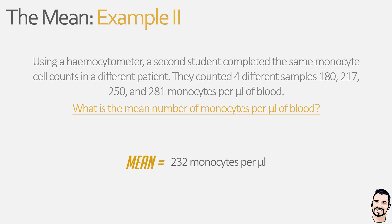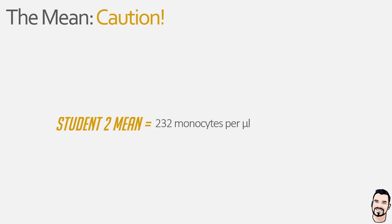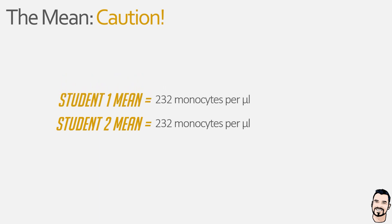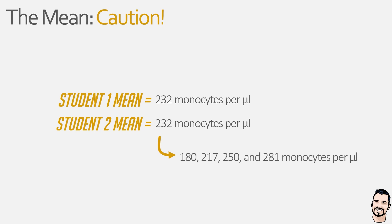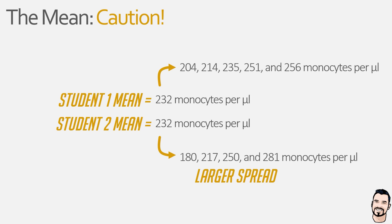Now you might notice something here. The mean value of monocytes counted by student 2 is exactly the same as the mean value counted by student 1. However, the data used to generate these values is quite different. If we look at the cell counts for student 2 we had 180, 217, 250 and 281 — four numbers which deviate from the mean by quite a bit. Comparing this to student 1 we had 204, 214, 235, 251 and 256, all of which are relatively close to the mean.